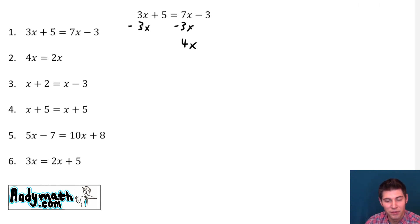If I'd subtracted 7x from both sides, I can show you. What would have happened is I would have gotten a negative 4x on this side. I think it's easier to work with the positive numbers, so we'll subtract 3x from both sides. 7x minus 3x is 4x on this side, and on this side it cancels, so we just have the 5.